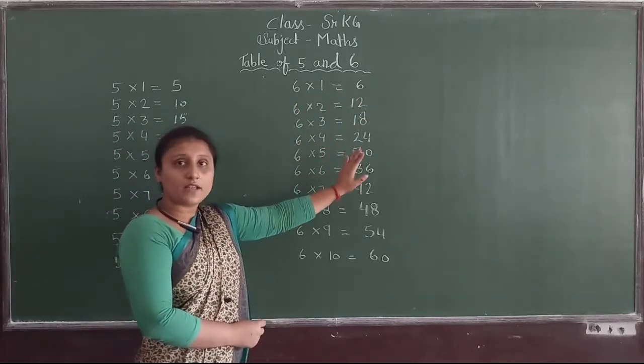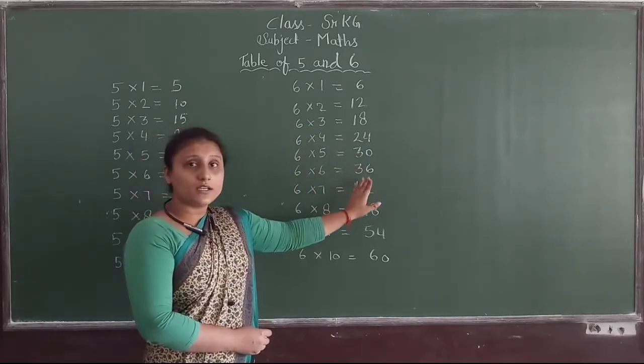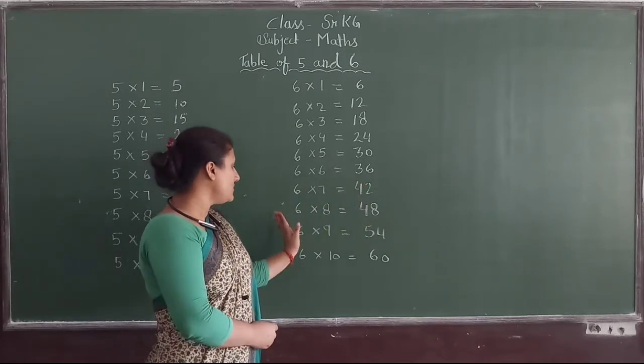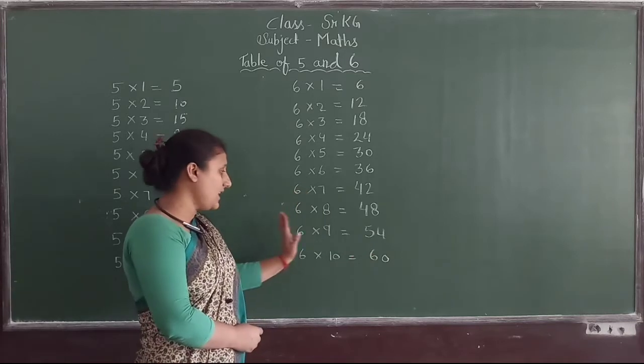6×2=12, 6×3=18, 6×4=24, 6×5=30, 6×6=36, 6×7=42, 6×8=48, 6×9=54, 6×10=60.